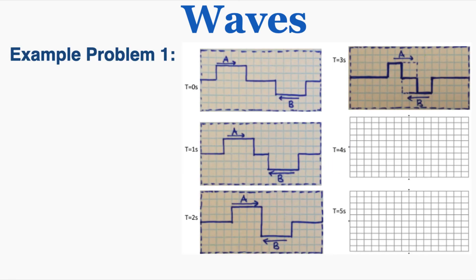In example number 1, I have two waves moving through each other, and I'm given snapshots of where they are at different times from t equals 0 seconds up to t equals 5 seconds. I need to predict what the superposition will look like at t equals 4 and t equals 5. Wave A is moving one block to the right every second, and wave B is moving one block to the left every second. Starting from t equals 3, I can push A one block to the right and B one block to the left to find their superposition.